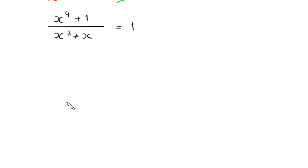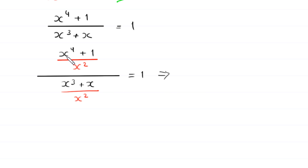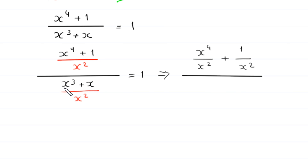Now we divide both the numerator and the denominator by x squared. So x to the power 4 plus 1 over x squared, all divided by x cubed plus x over x squared, is equal to 1. The numerator x cubed plus x over x squared can be written as x cubed over x squared plus x over x squared.